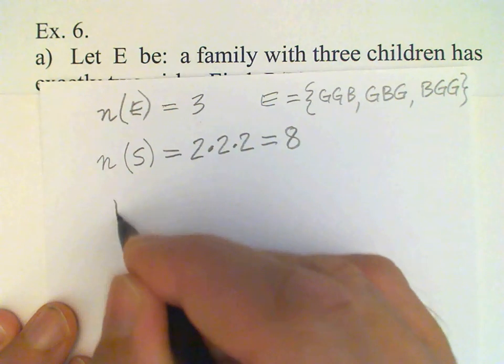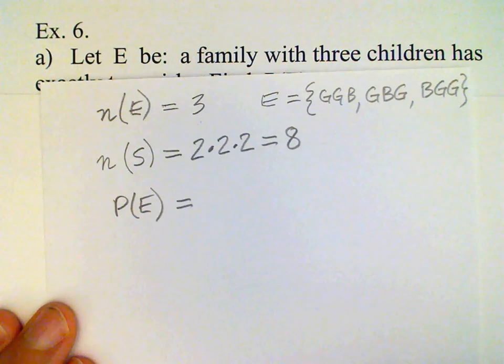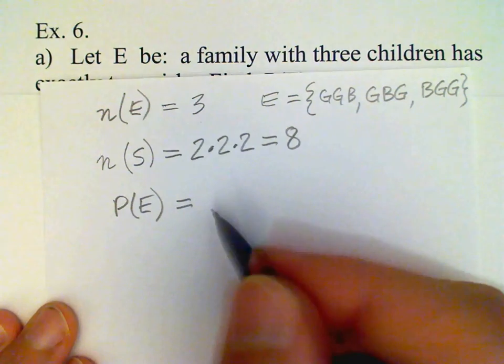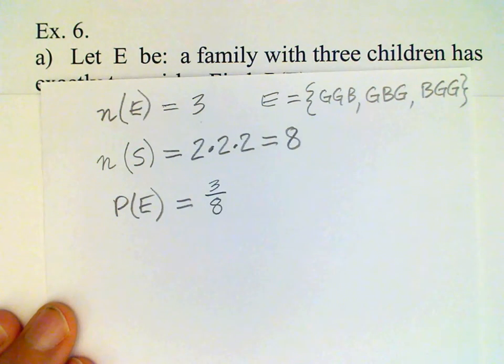And then the probability of E is the ratio of these two counts. So the probability of a family having exactly two girls is three-eighths. Of course, this assumes that boy and girl are equally likely. That's close, but not exactly true.